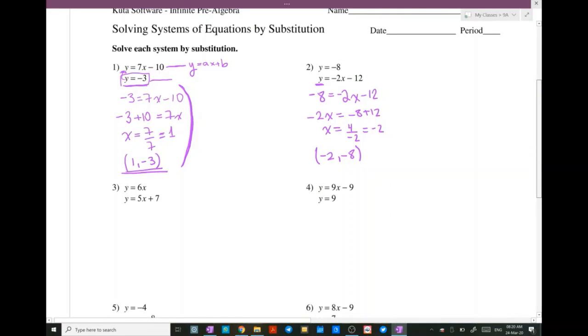Number 3, we have 6x is equal to 5x plus 7. So 1x is equal to 7. Then we take the x and replace it in the first equation. So y is equal to 6 times 7, which is equal to 42.